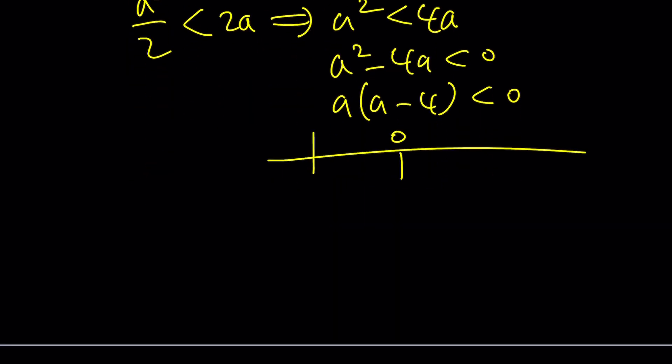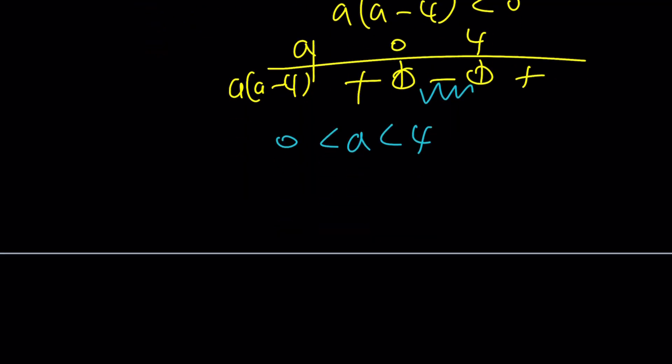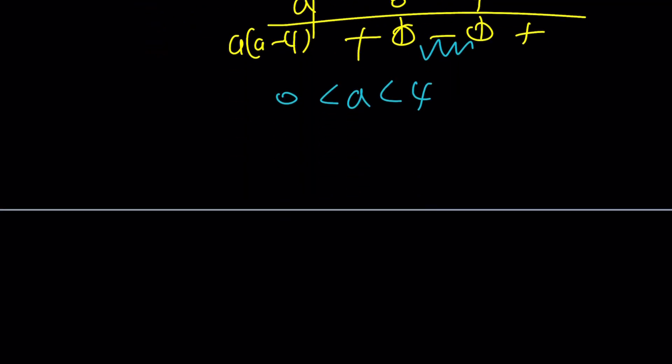And this just means that if you make a table, I usually do, you're going to have a here and a times a minus 4 here. You're going to have a plus sign and a minus sign and a plus sign. Notice that we're looking for the negative area. So, a needs to be between 0 and 4. We know that a is a positive integer. Anyways, that doesn't matter. A needs to be less than 4, which means a can be 1, 2, or 3. Beautiful. But a is even, so it can only be 2.